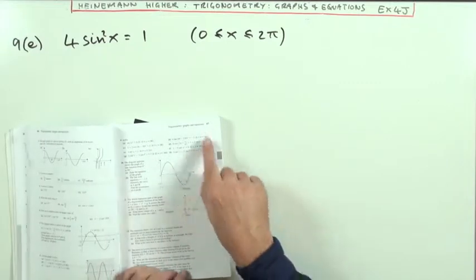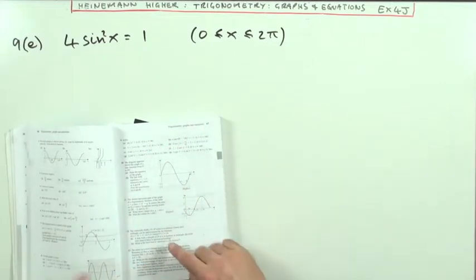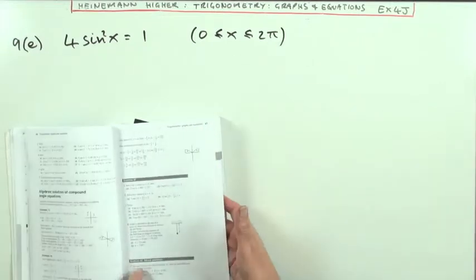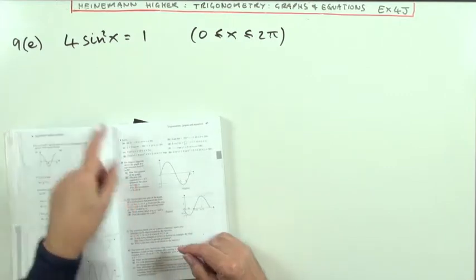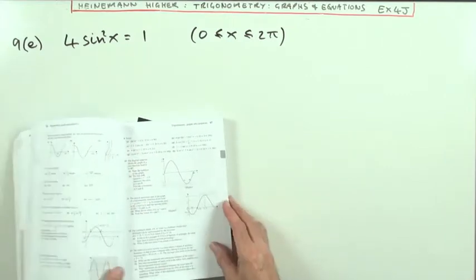Hi everyone. Chapter 4, Trigonometry, Graphs and Equations. The mixed exercise, the second part of number 9, the ones with the squares in it.